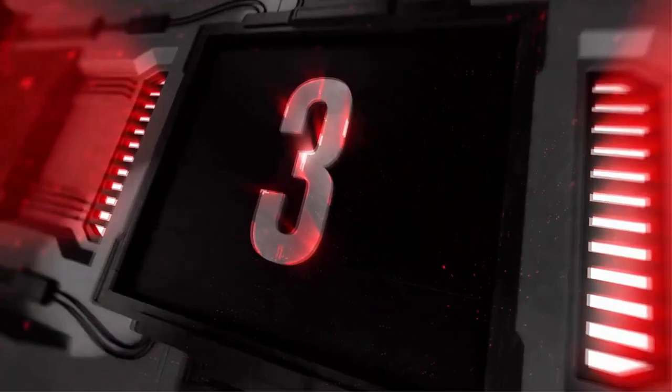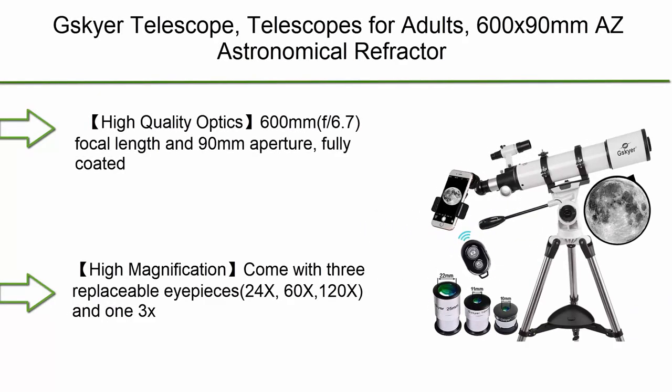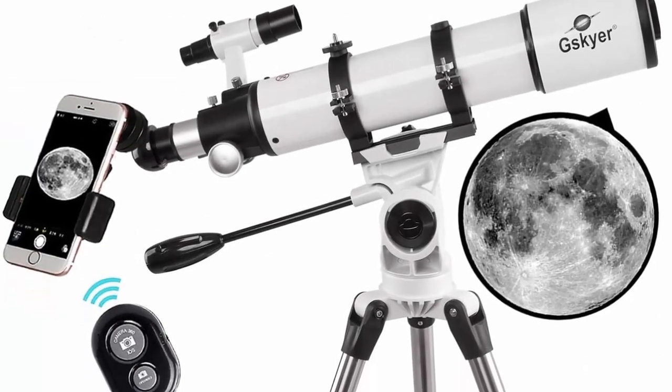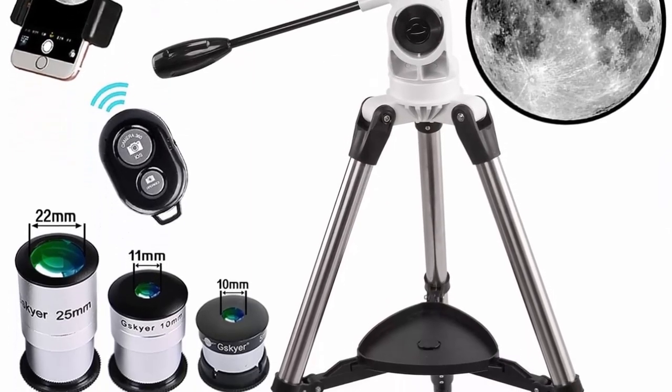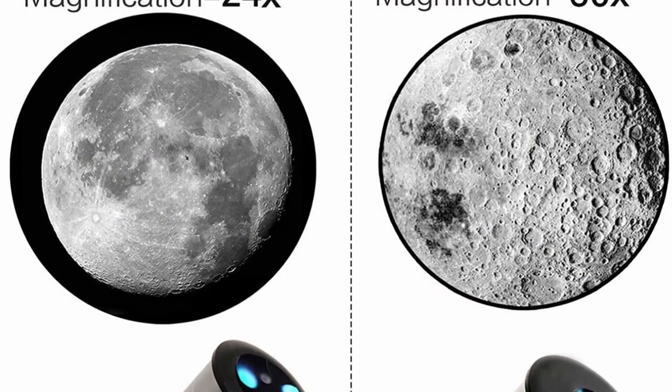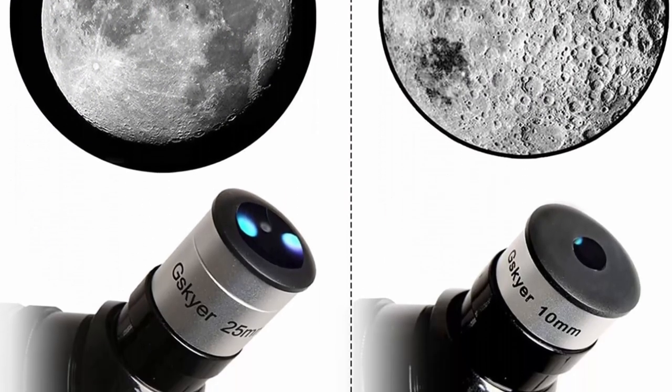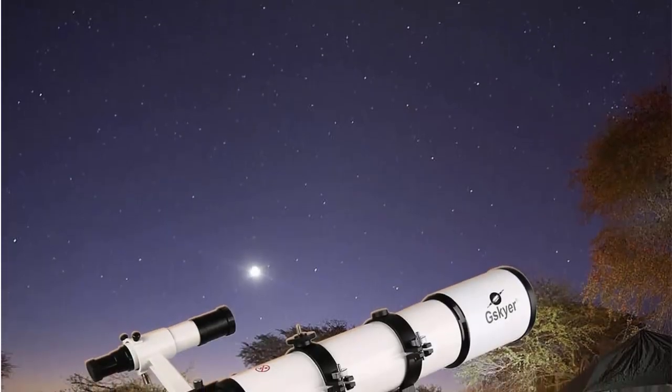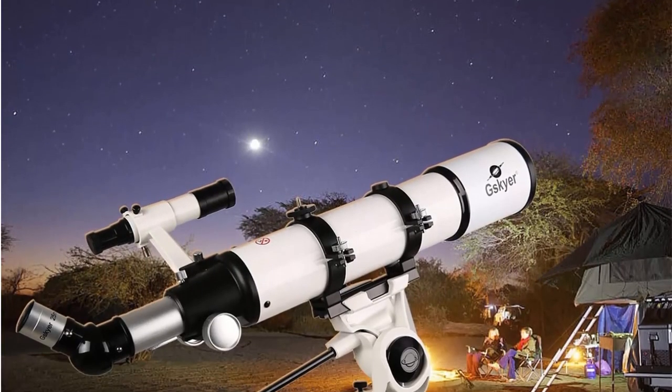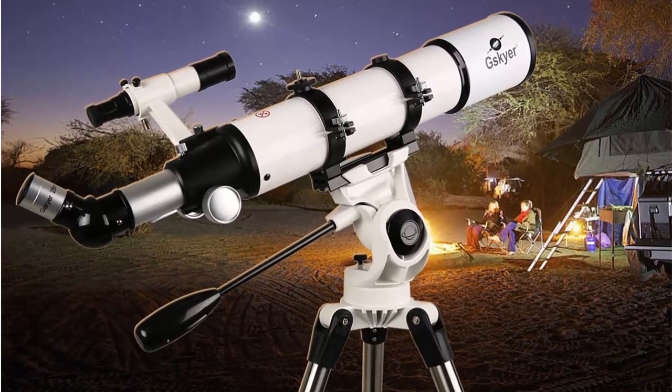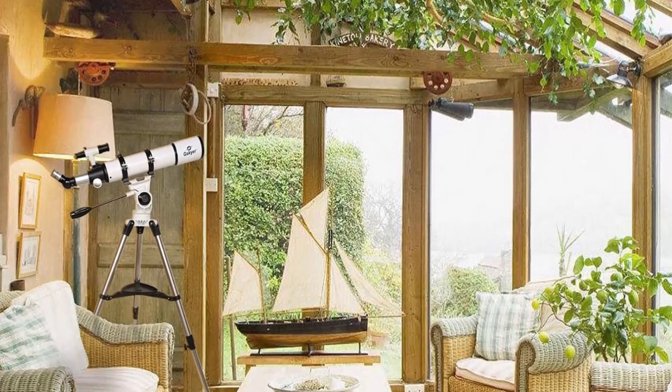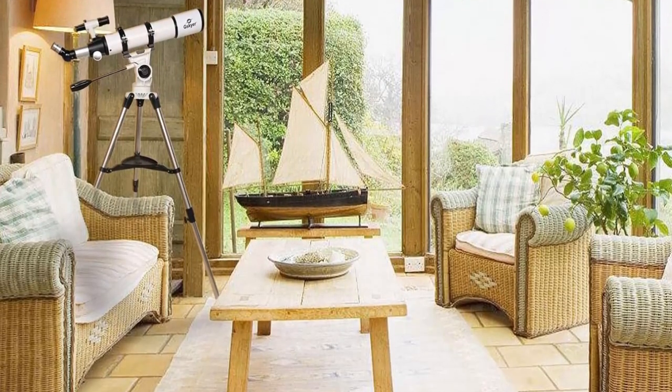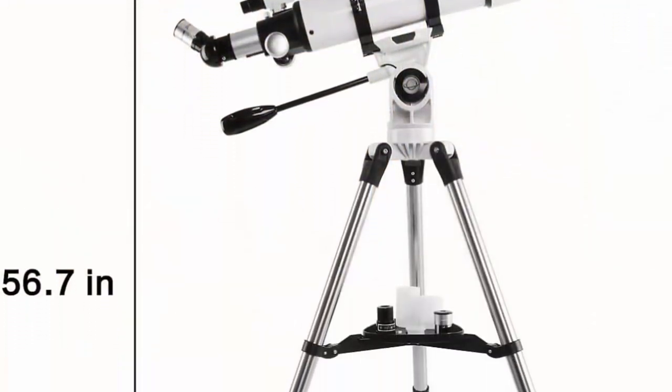Top 3. G-Skyer Telescope. Telescopes for Adults 600x90mm AZ Astronomical Refractor Telescope. Telescope for Kids, Telescopes for Adults Astronomy, German Technology Scope. High Quality Optics. 600mm f/6.7 focal length and 90mm aperture. Fully coated optics glass lens with high transmission coatings create stunning images and protect your eyes. High magnification. Come with three replaceable eyepieces: 24x, 60x, 120x, and one 3x Barlow lens. 3x Barlow lens trebles the magnifying power of each eyepiece.